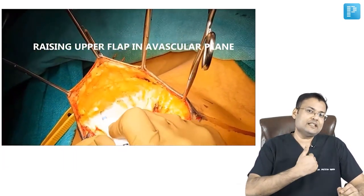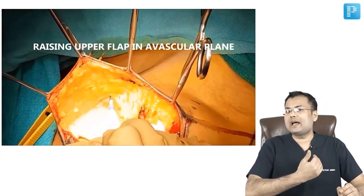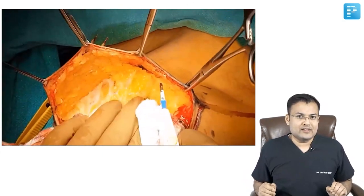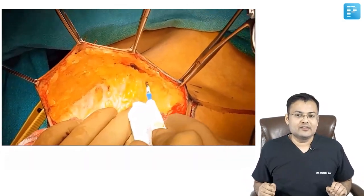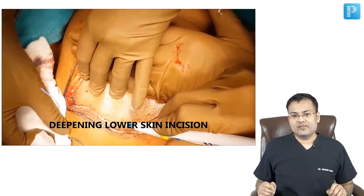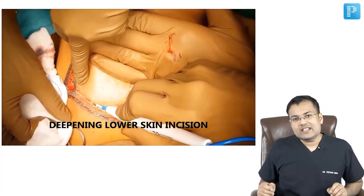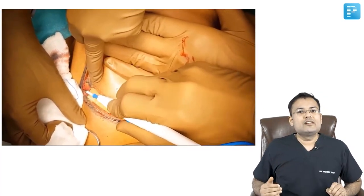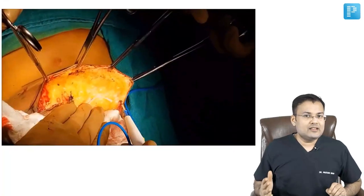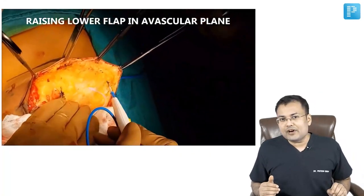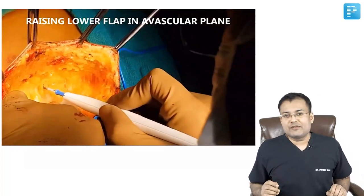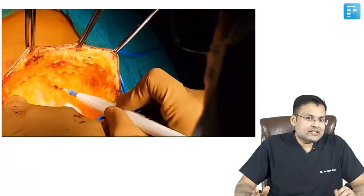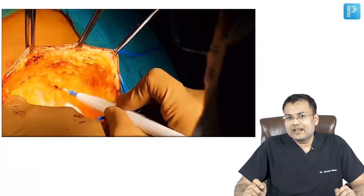The upper skin flap is raised up to the clavicle. Now you can see we are deepening the lower skin incision. Similarly, we are going to raise the skin flap and sharp dissection will be performed in the avascular plane between subcutaneous fat and mammary fat, with extent up to the upper part of the rectus sheath.